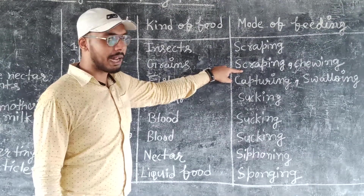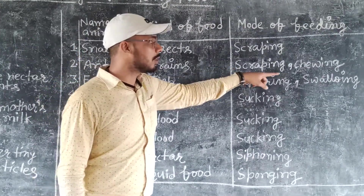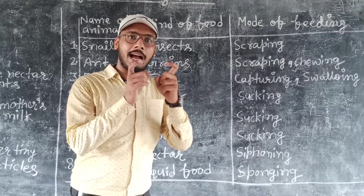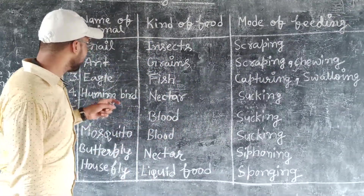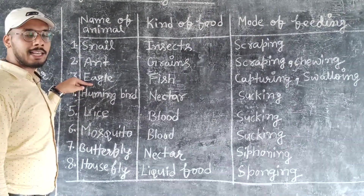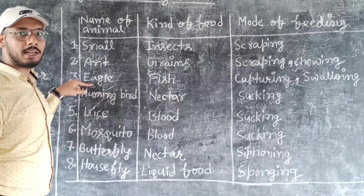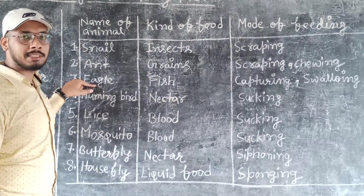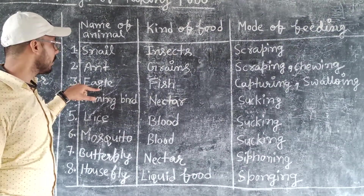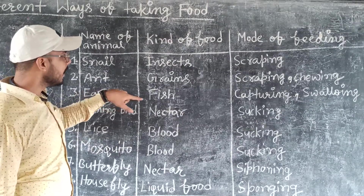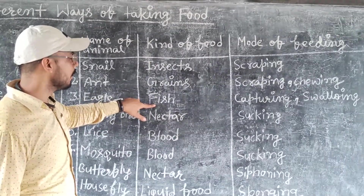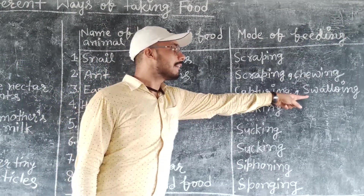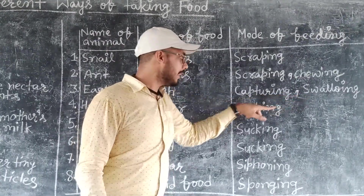Second is the hummingbird. It goes to plants and feeds from the plants. They capture nectar from the plants. That is how they feed.